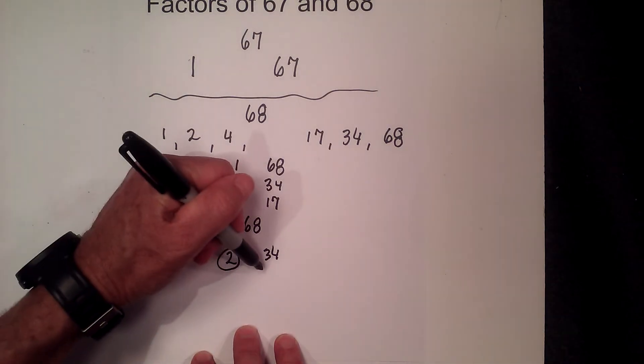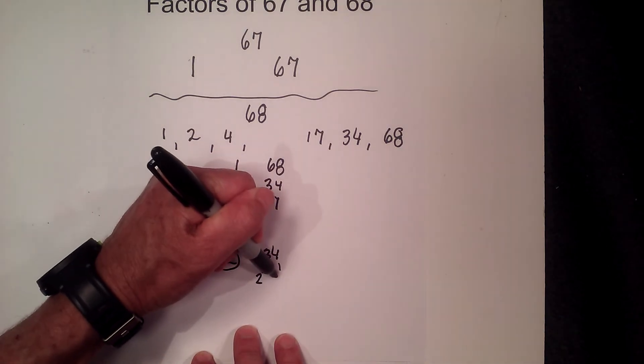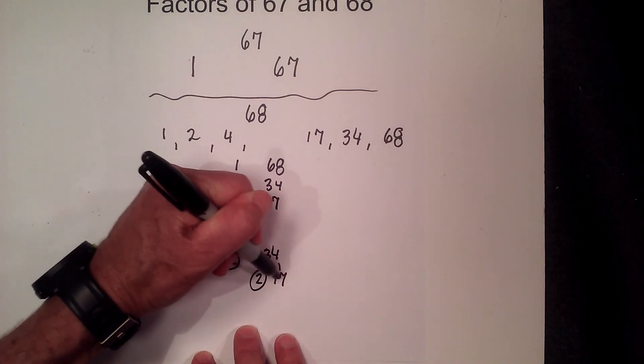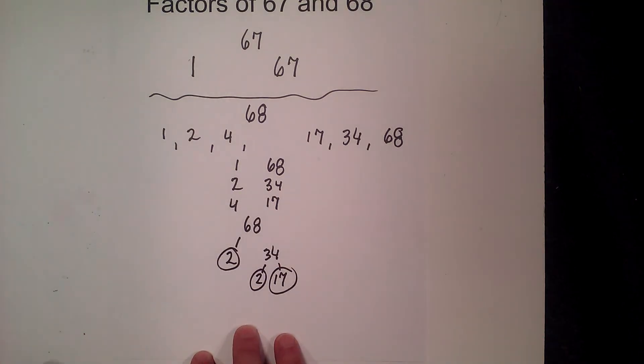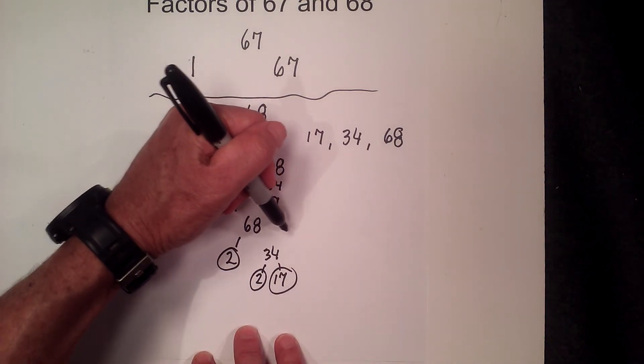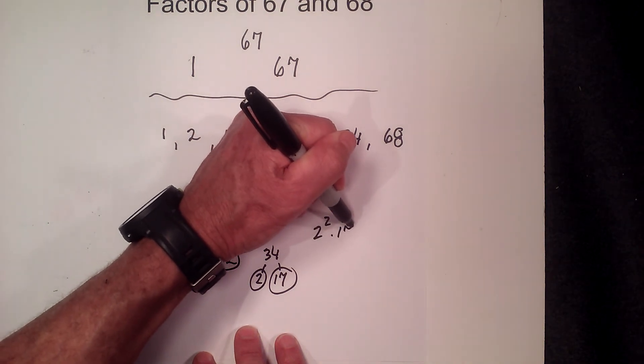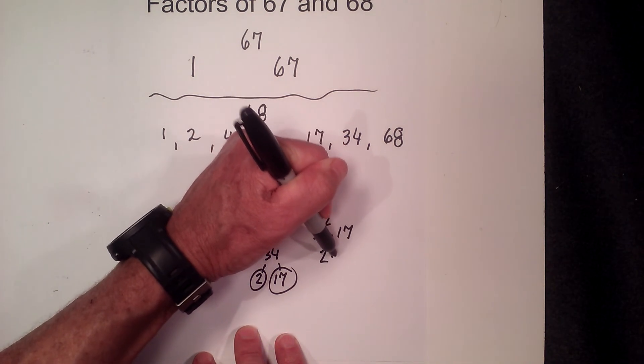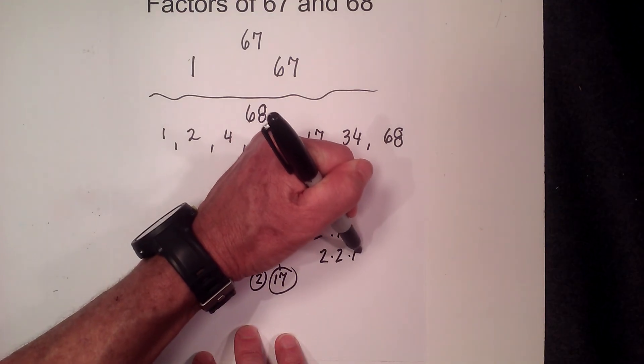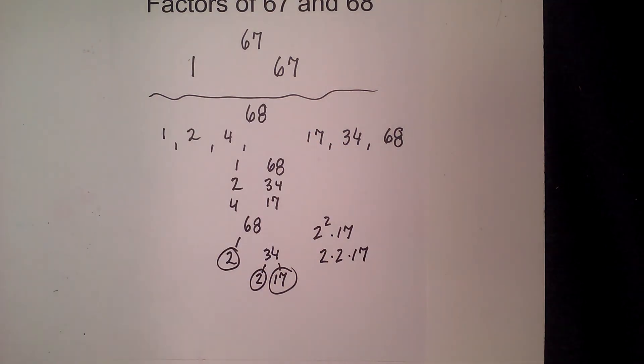Circle the 2 because it is prime, and then 2 times 17. Circle both of those because they are prime, so the prime factors for 68 are 2 squared times 17, or 2 times 2 times 17.